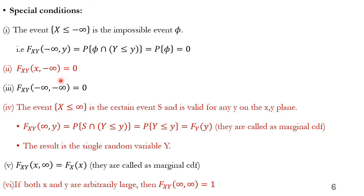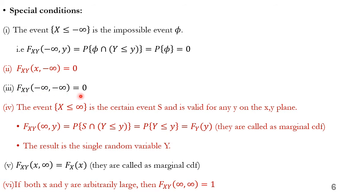Let us discuss some special boundary conditions of bivariate random variables. First, the event (X ≤ −∞) is an impossible event, so F_xy(−∞, y) = probability of the null set intersection with (Y ≤ y) = 0. Second, F_xy(x, −∞) is also equal to 0. Third, F_xy(−∞, −∞) is equal to 0.